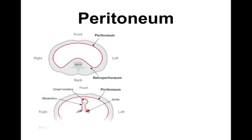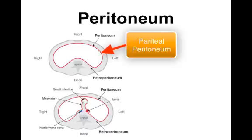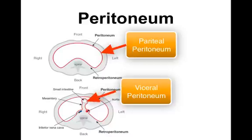Now the organs seem to originate from the posterior of the cavity and have sort of pushed into the membrane and the cavity. This creates a double layer between the organs and the cavity wall. The layer on the cavity wall is called the parietal peritoneum while that on the surface of the organs is called the visceral peritoneum.